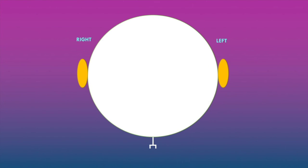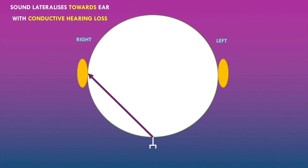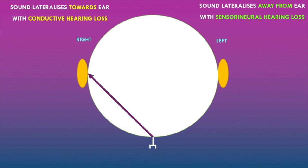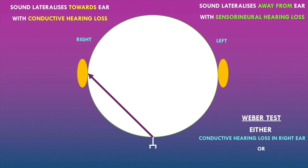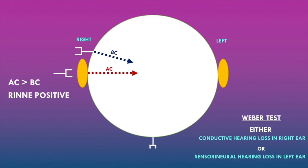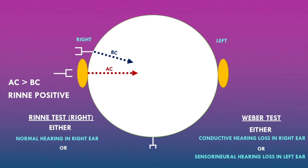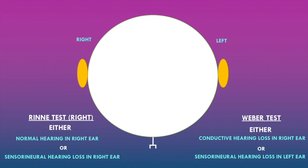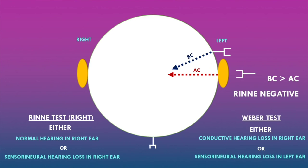On the Weber test, lateralization to the right ear indicates either conductive hearing loss in the right ear or sensorineural hearing loss in the left ear. The Rinne test in the right ear showed air conduction greater than bone conduction — a Rinne positive test — indicating either normal hearing or sensorineural hearing loss in the right ear. The Rinne test in the left ear showed bone conduction greater than air conduction — a Rinne negative test — indicating conductive hearing loss in the left ear.